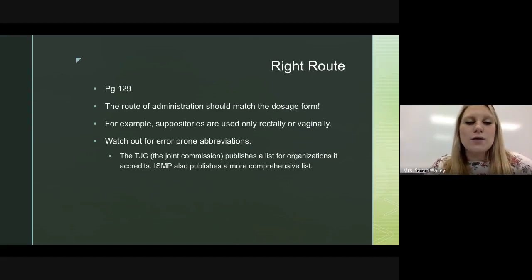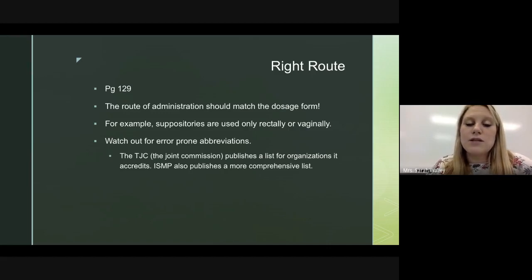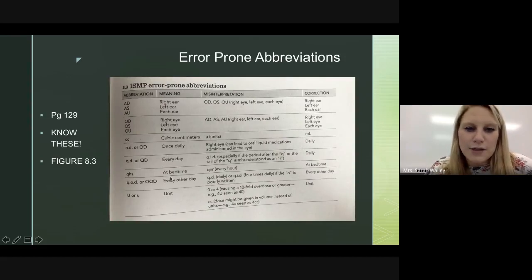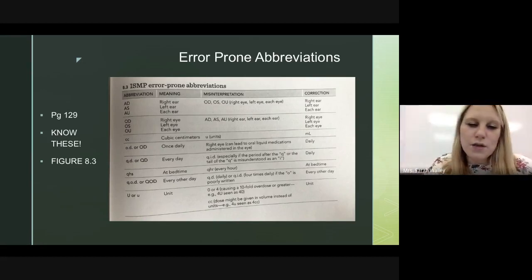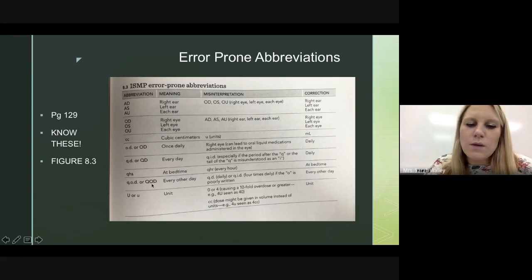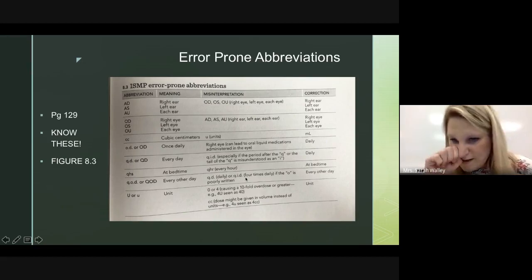Right route: the route of administration should match the dosage form — for example, suppositories are only used rectally or vaginally. Watch out for error-prone abbreviations. The Joint Commission publishes a list for organizations it accredits, and ISMP publishes a more comprehensive list. You need to know error-prone abbreviations — for instance, QD (daily), QID (four times a day), and QOD (every other day) are easily misinterpreted.